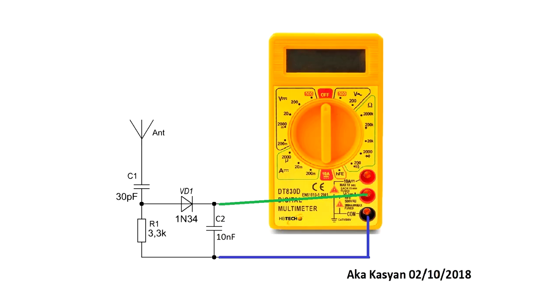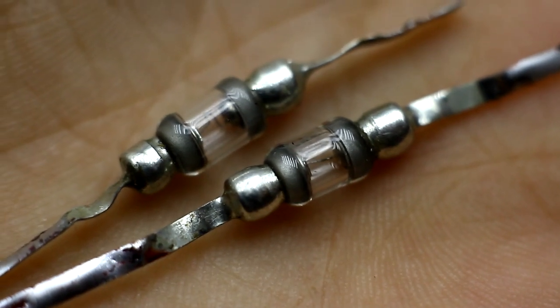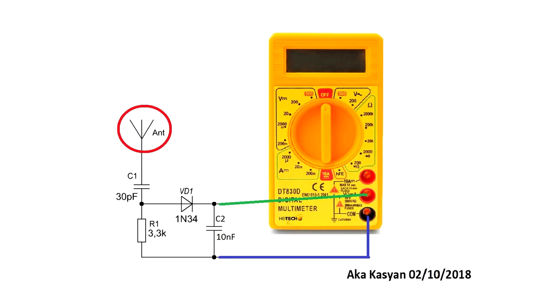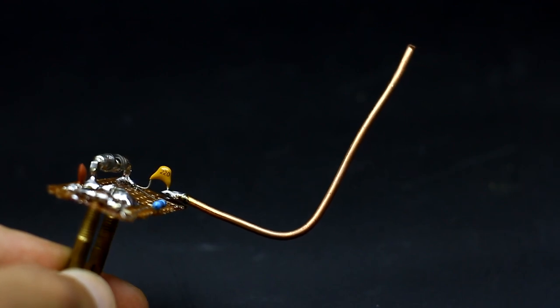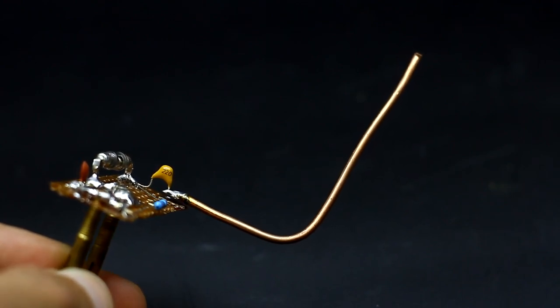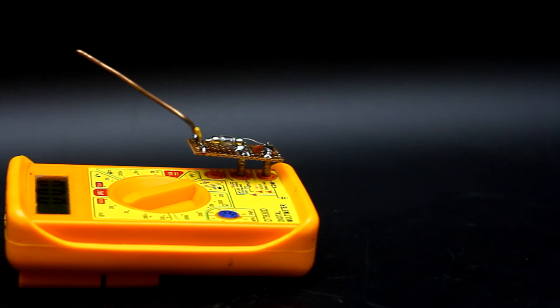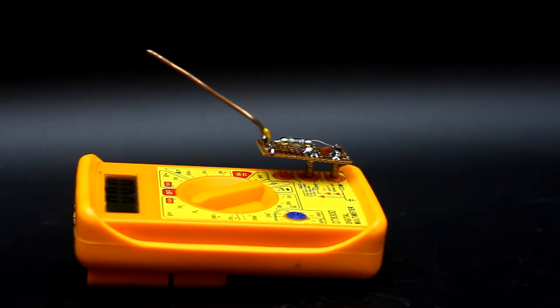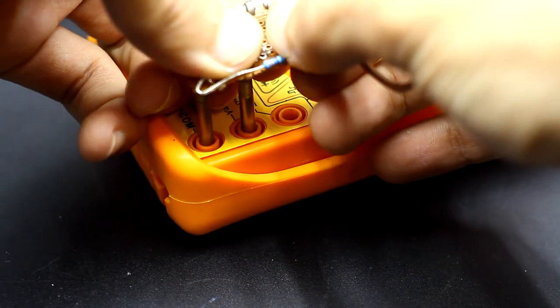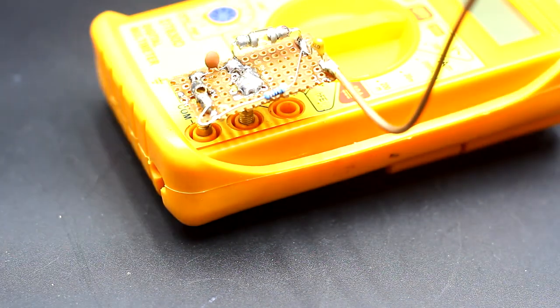The detector is assembled on the basis of one germanium diode of the old type and few other details. An antenna is a piece of copper wire with a length of 5-7 cm and a diameter of 1 mm. The device doesn't need an additional power source, which makes it very compact. Connect it to the middle and lower socket of the multimeter.